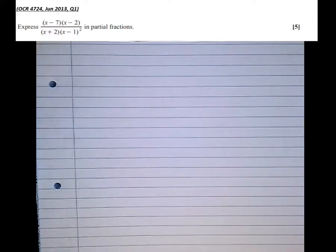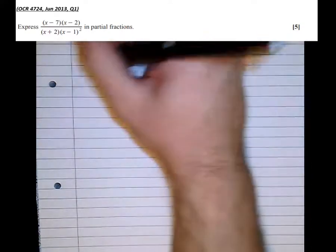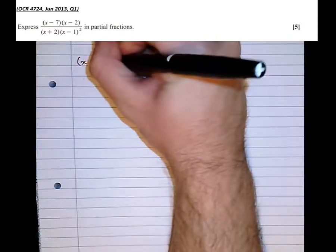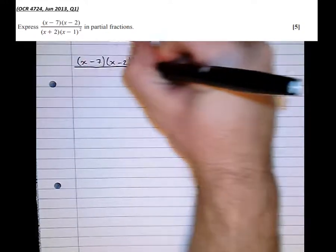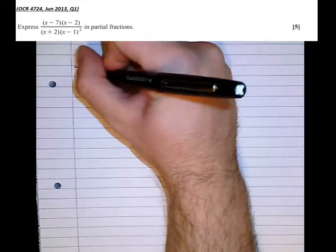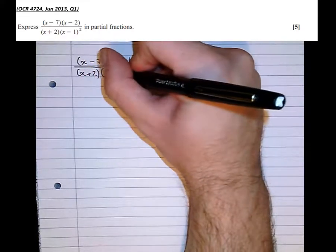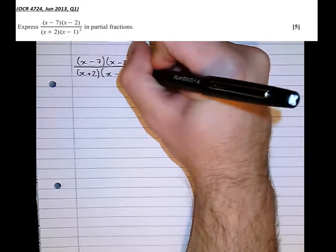So we can see that we've got x minus 7 times x minus 2 on the numerator, over x plus 2 times x minus 1 all squared.